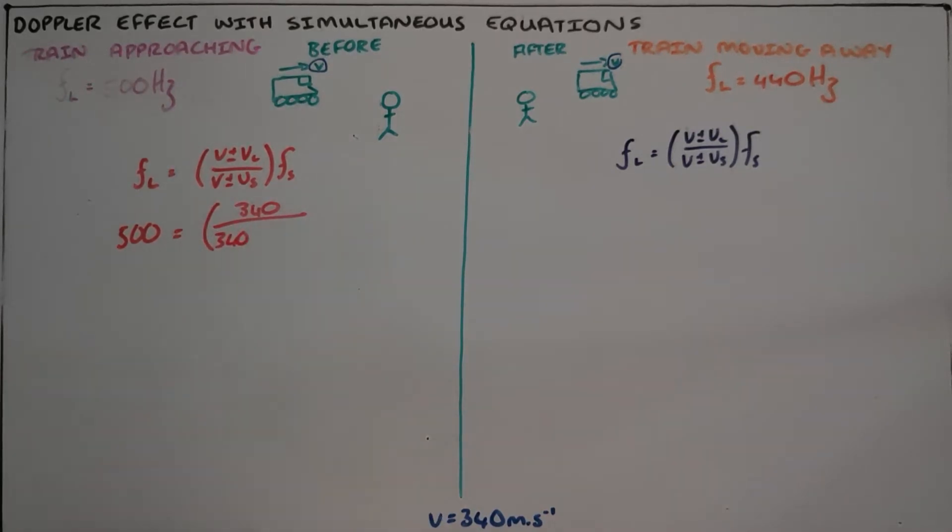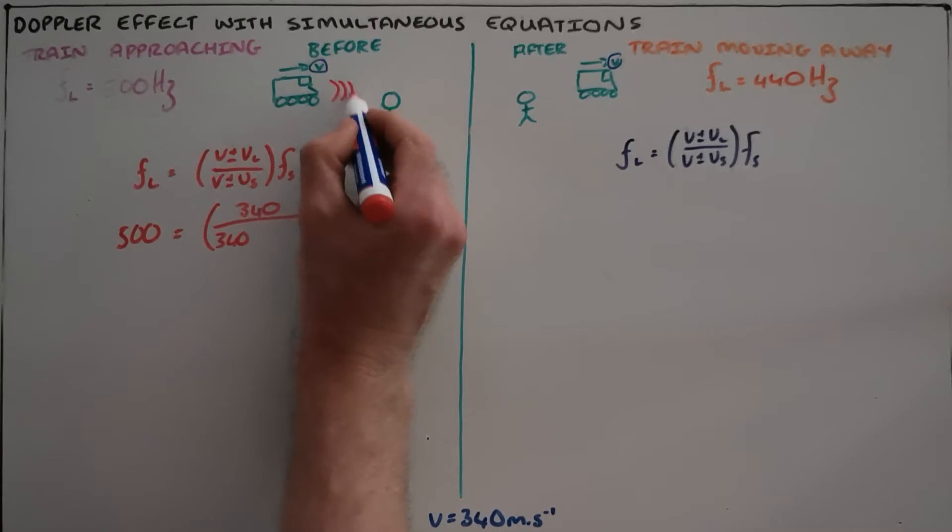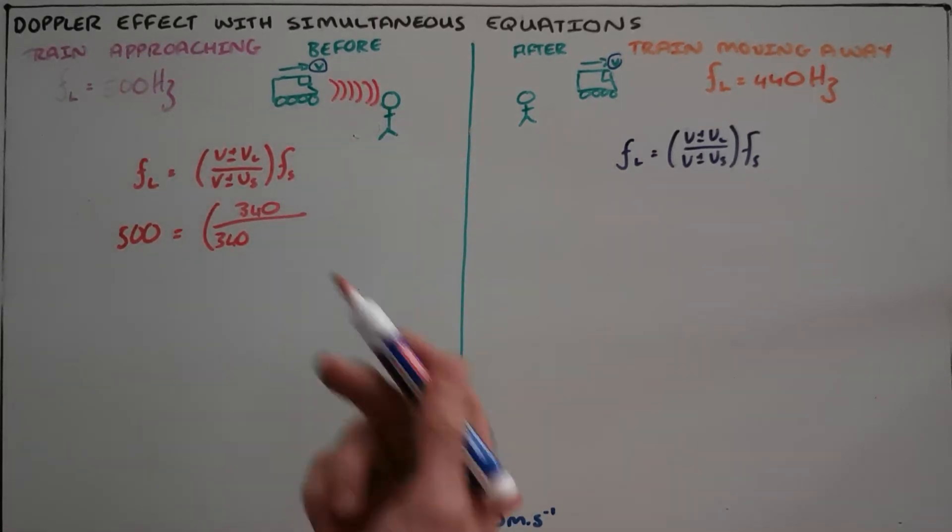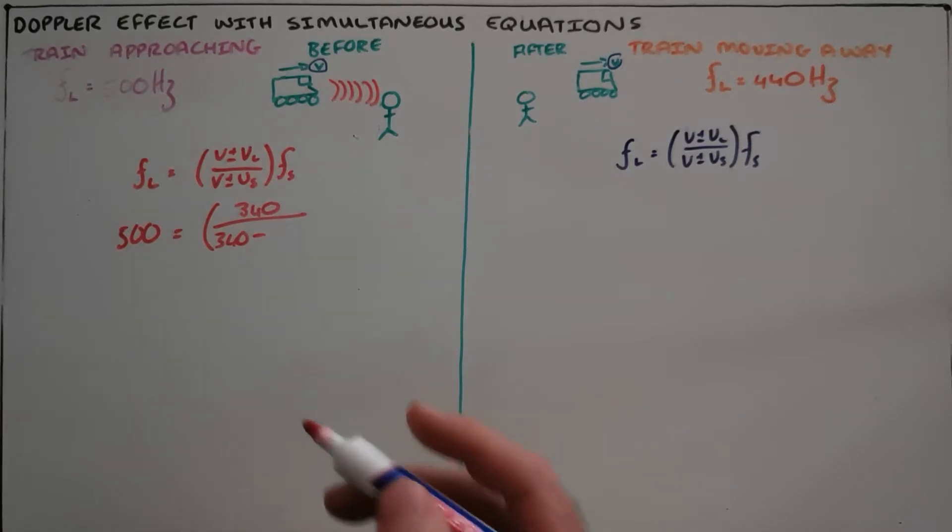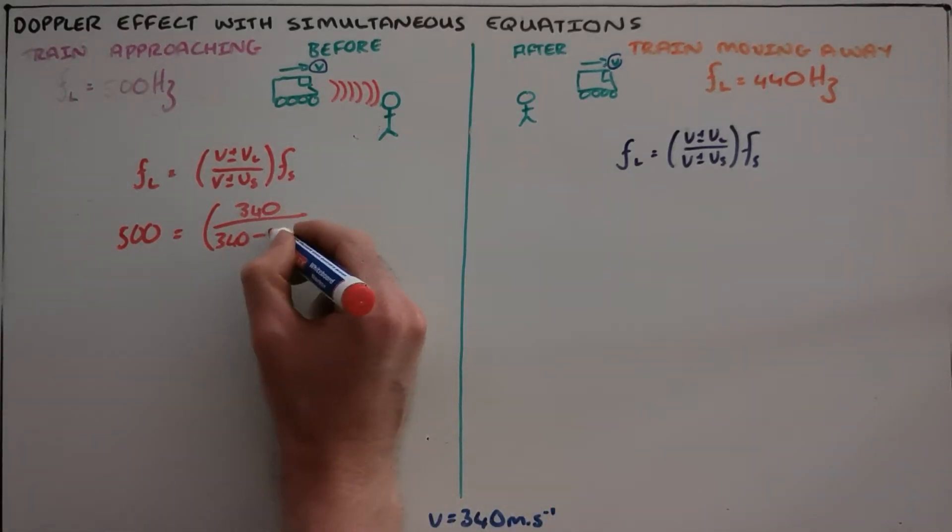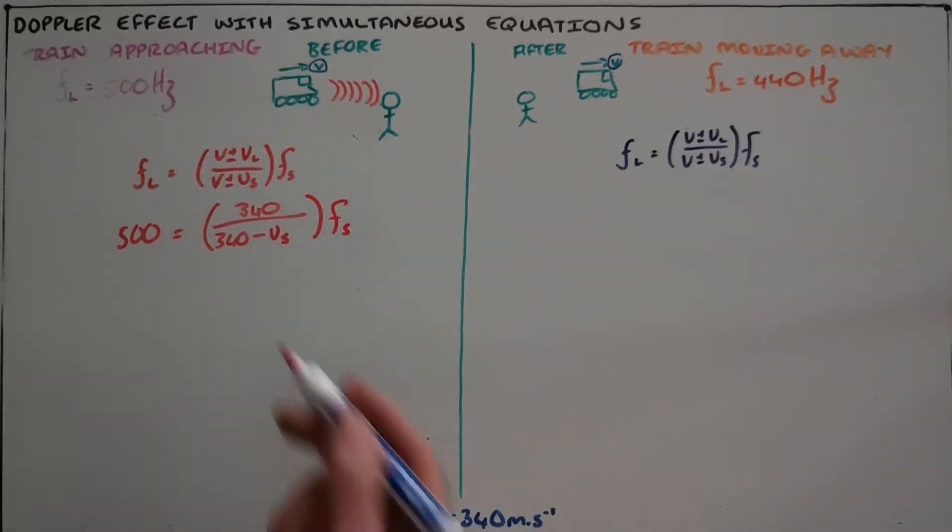And now we know that since the train is moving towards the observer, those waves are going to be compressing or condensing, and so this should be a minus sign here. And that is minus the speed of the source, which is also an unknown along with the frequency of that source.